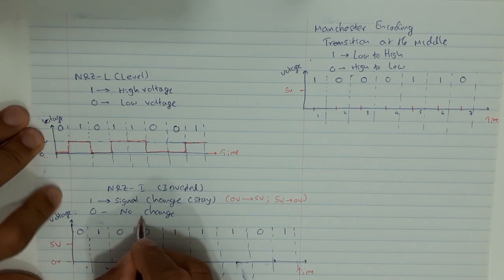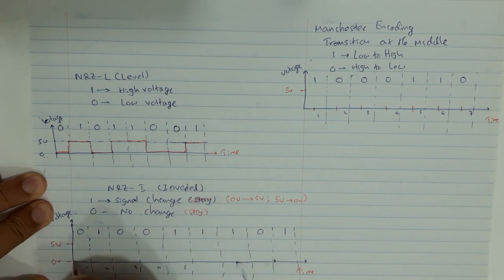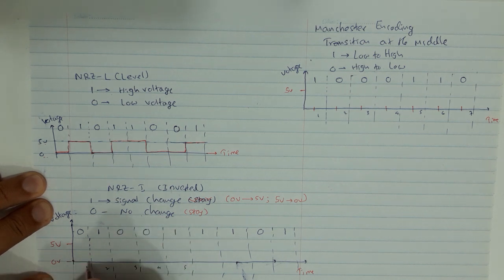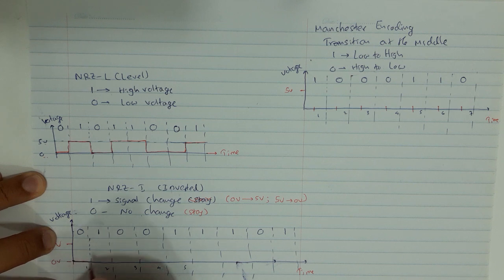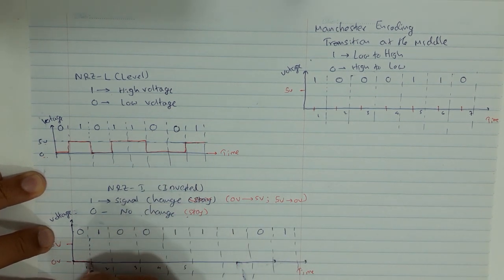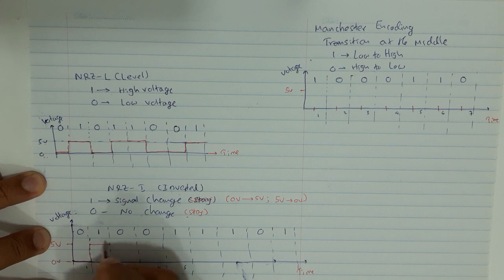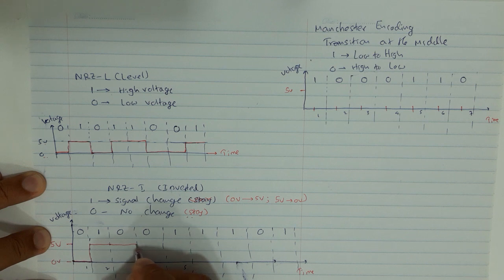We start the NRZ-I signal. Here we have 0 — is there any transition? No. So we don't have any transition; we stay at the same place. I start the signal representation at 0 voltage and continue. For 0, no change, so we stay. Then for 1, we need a transition — I am at 0, so I change it to 5 volts and continue that 5 volt during that time period. Then 0 means stay — continue the 5 volt as is.